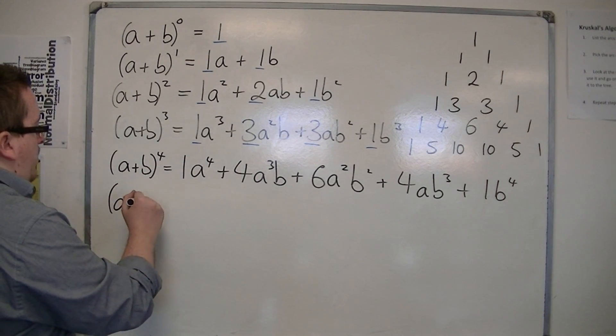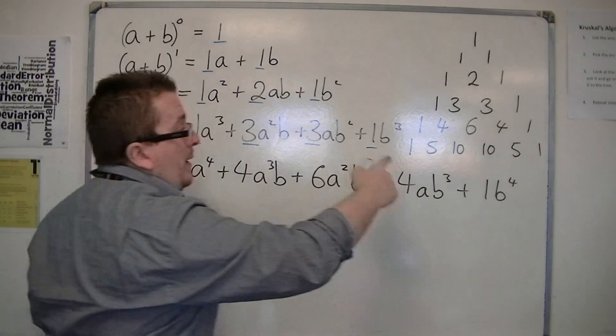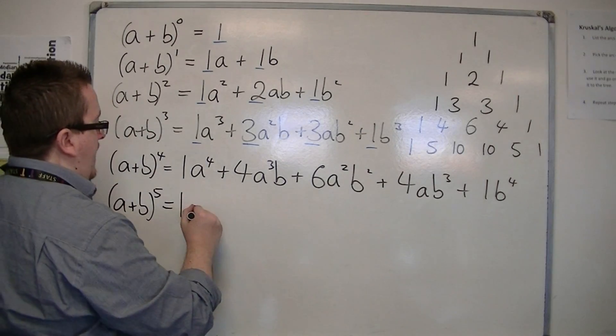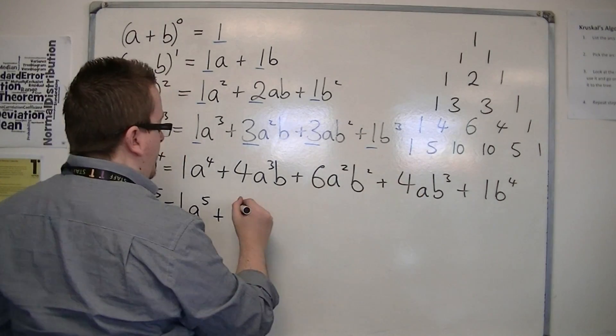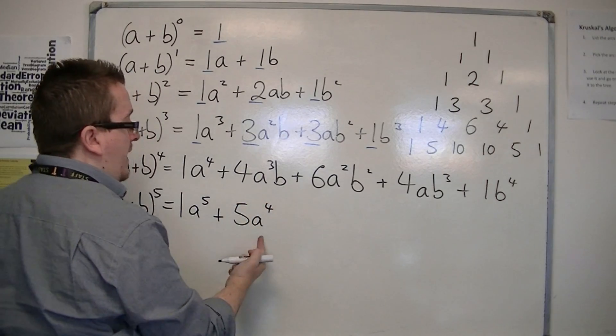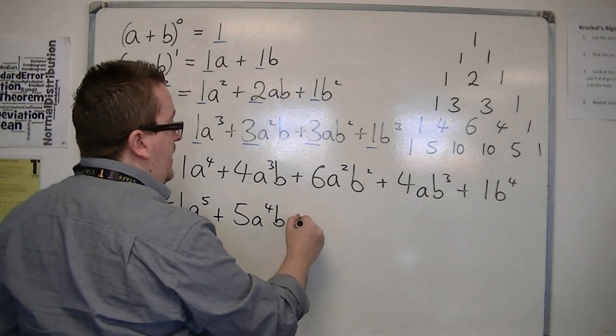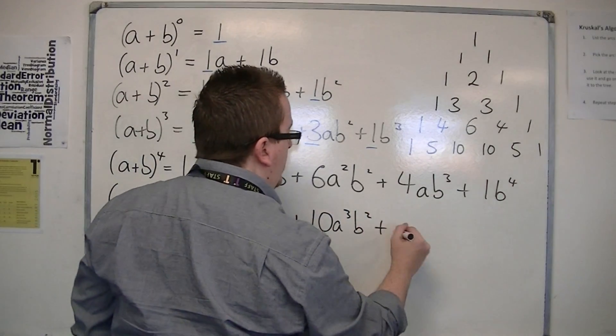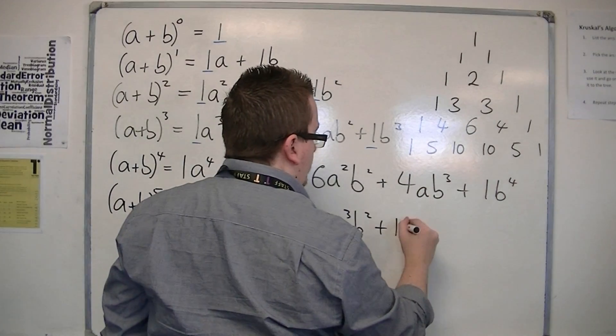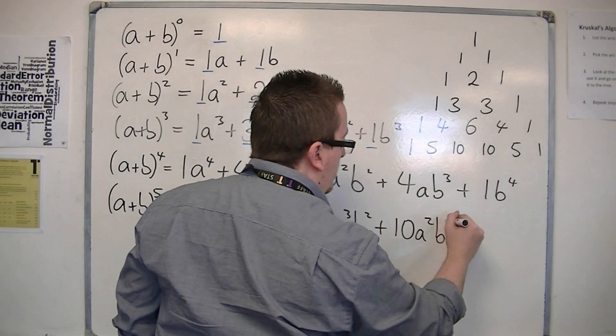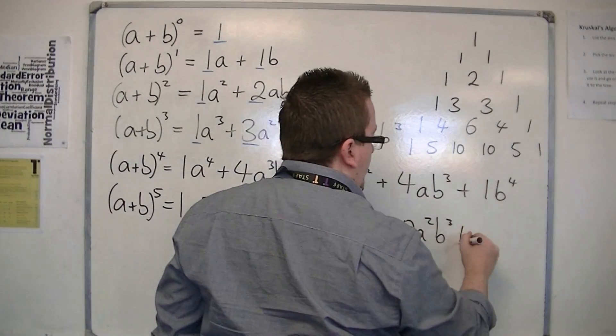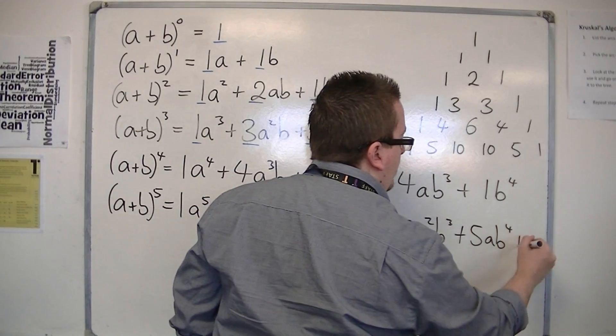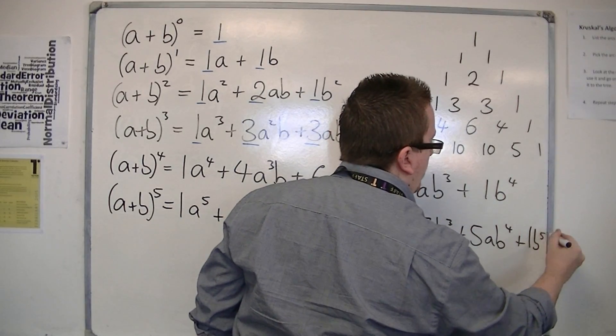If I was going to do (a+b)^5, I'd use Pascal's Triangle for that row. So I've got 1a^5 + 5a^4b. Then 10a³b², 1 less power for the a's, 1 more for the b's. Then 10a²b³, then 5ab^4, and finally 1b^5.